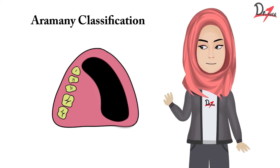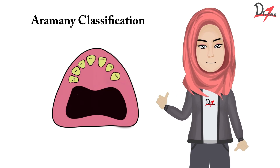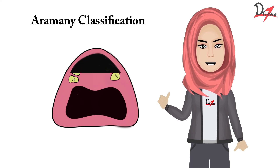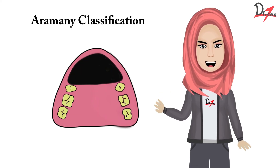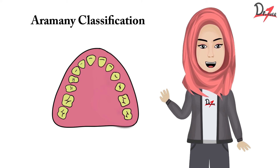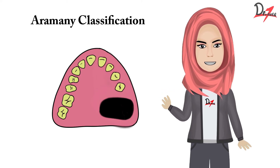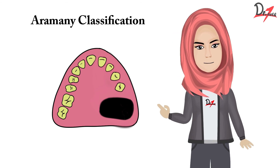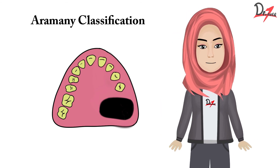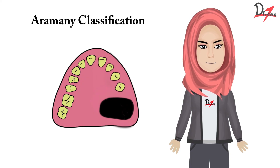Class 5 is posterior resection. Class 6 is anterior resection. And in some articles, class 7 has also been given — it is a small unilateral defect posterior to a standing abutment tooth, where the abutment tooth is the supporting tooth. So this is a small unilateral posterior defect.